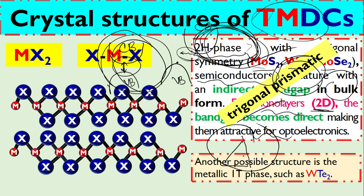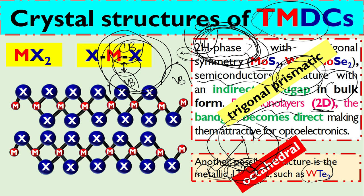This is the example of 1T-phase, and this material shows metallic properties. When it is in 1T-phase, it shows metallic nature, and this is an octahedral structure.